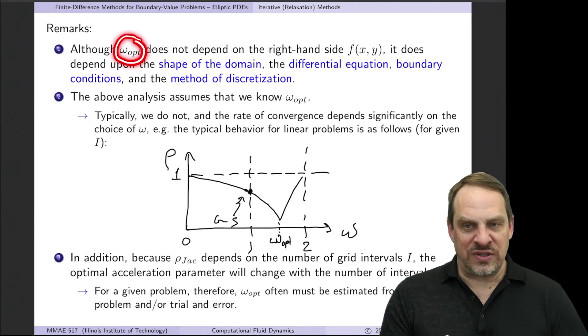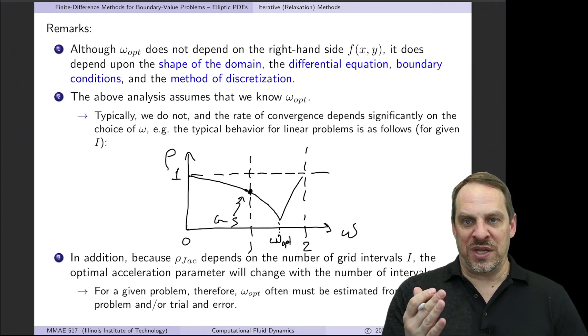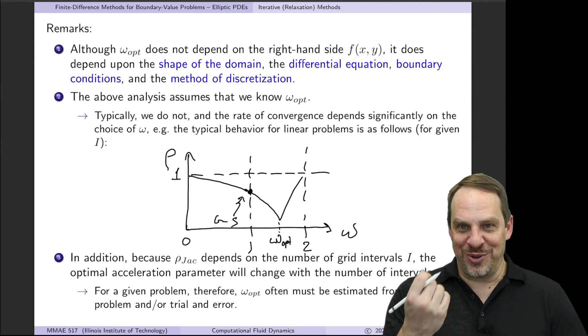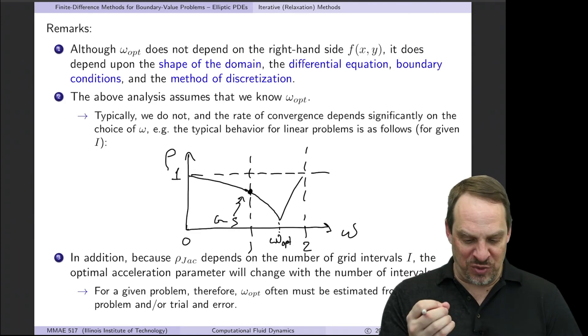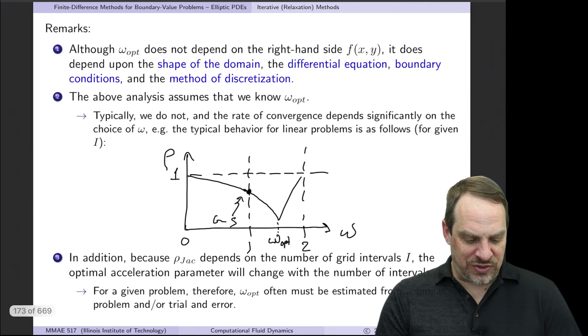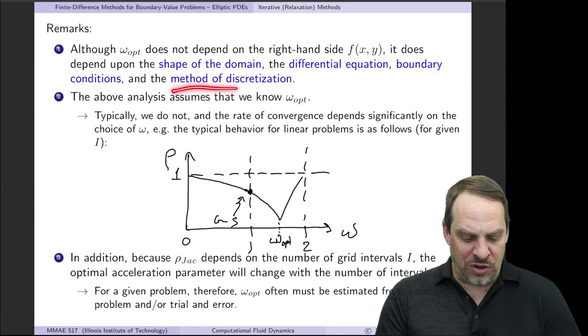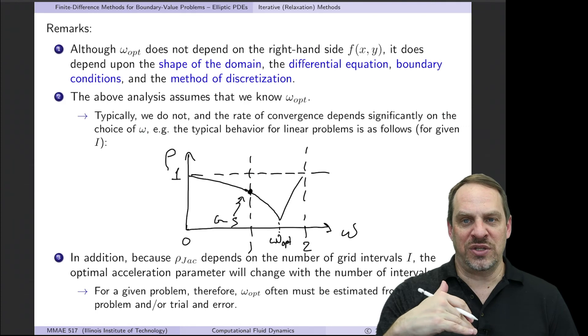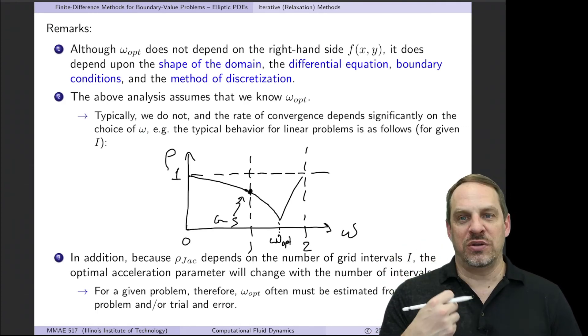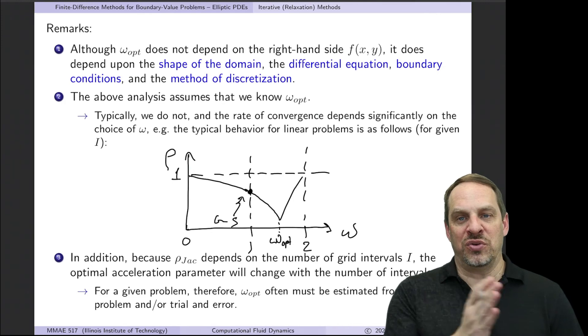One of the problems with SOR is I now have this additional parameter that I have to select, this omega. Normally we don't know what the optimal value of omega is, as is the case for our model problem. So I just have to find it through trial and error. And the other problem is it's affected by essentially every aspect of the problem. The only thing that does not affect the omega is f(x,y). Everything else, the shape of the domain, the differential equation itself, how I discretize it, the boundary conditions, all of those things affect the final system of equations and therefore affect the spectral radius and therefore affect the omega. So typically we don't know what omega_opt is. It's somewhere between 1, which is the Gauss-Seidel value, and 2, but we don't know where it is.